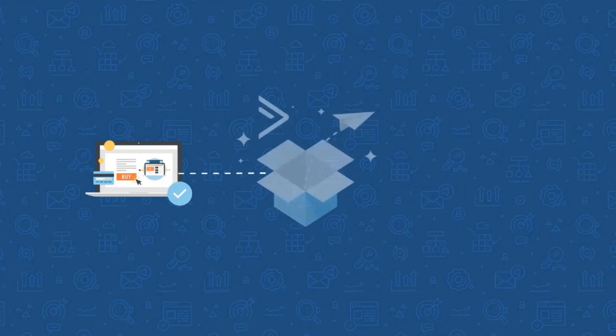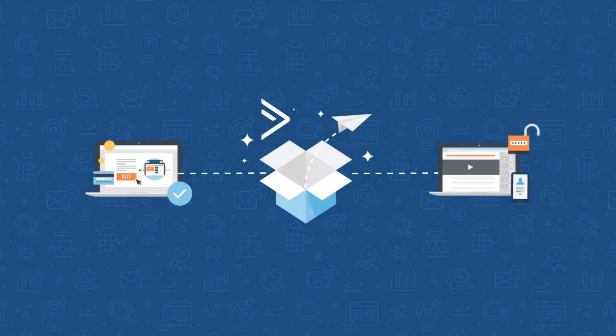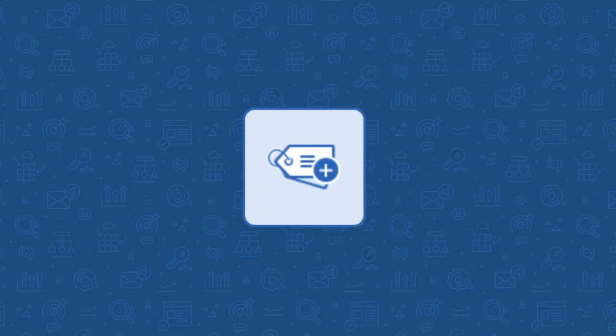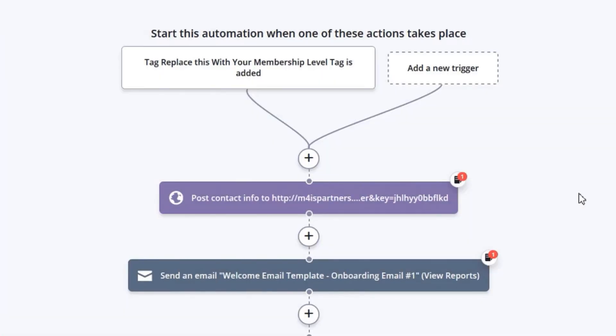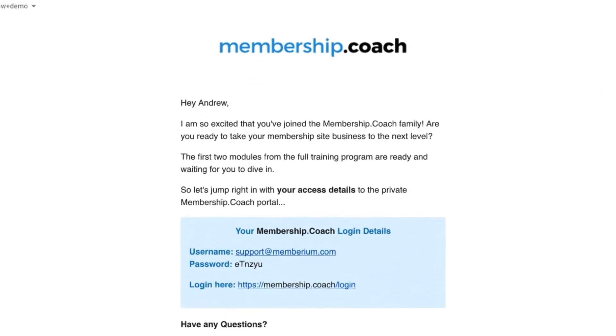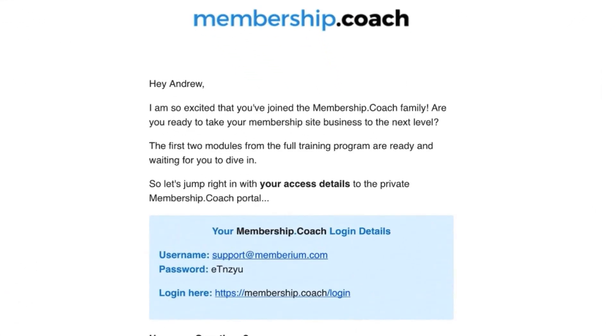Once their order is submitted, that info is then passed off to ActiveCampaign automatically. That triggers off the automation that automatically will add them as a member. Inside of that automation, it applies an ActiveCampaign tag, generates a password automatically for that user so they can log into your membership site, and then they are sent a welcome email thanking them for their order and giving them the information they need to log in to your Memberium membership site.